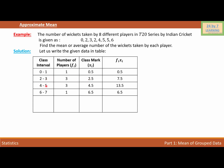For 4 to 5: (4+5)/2 = 4.5. And for 6 to 7: (6+7)/2 = 6.5. So we now have our frequency fi and the class mark xi filled in the table.